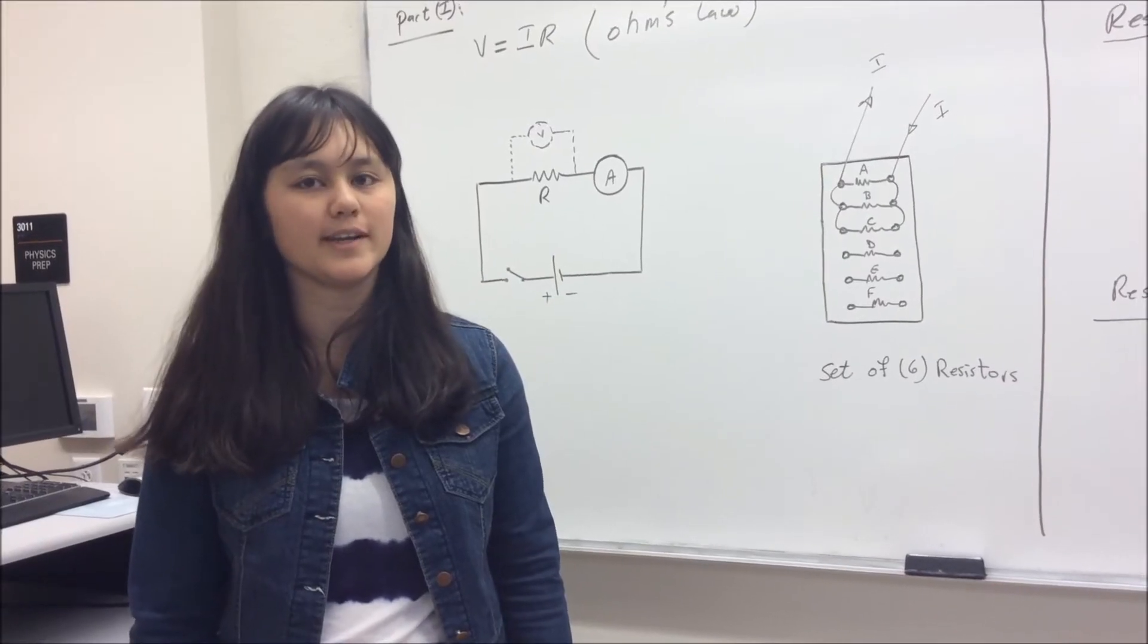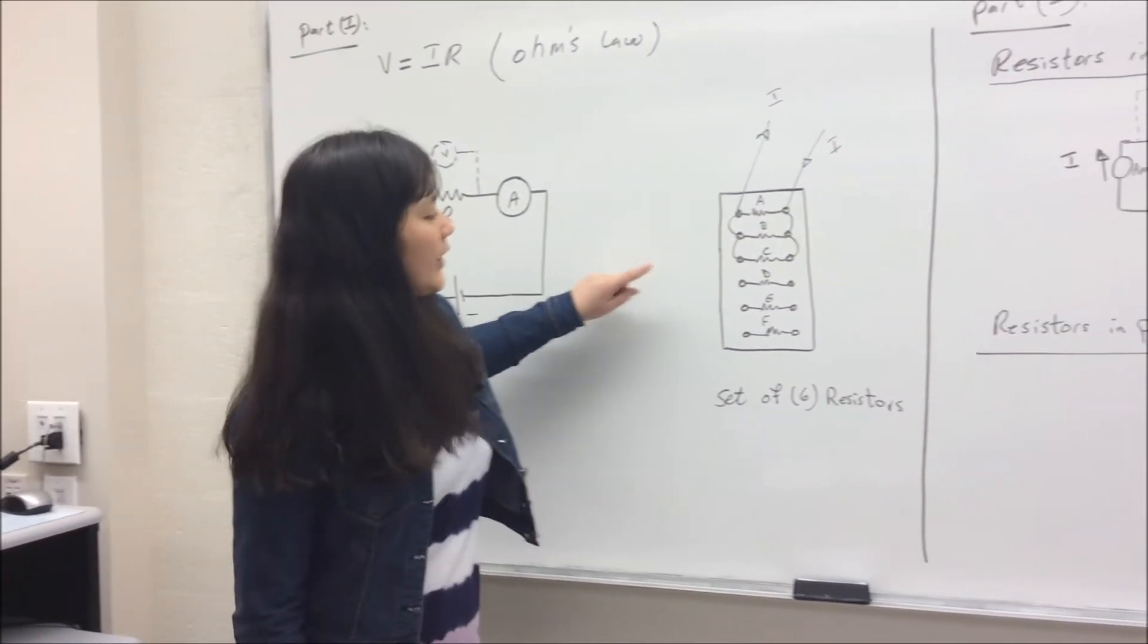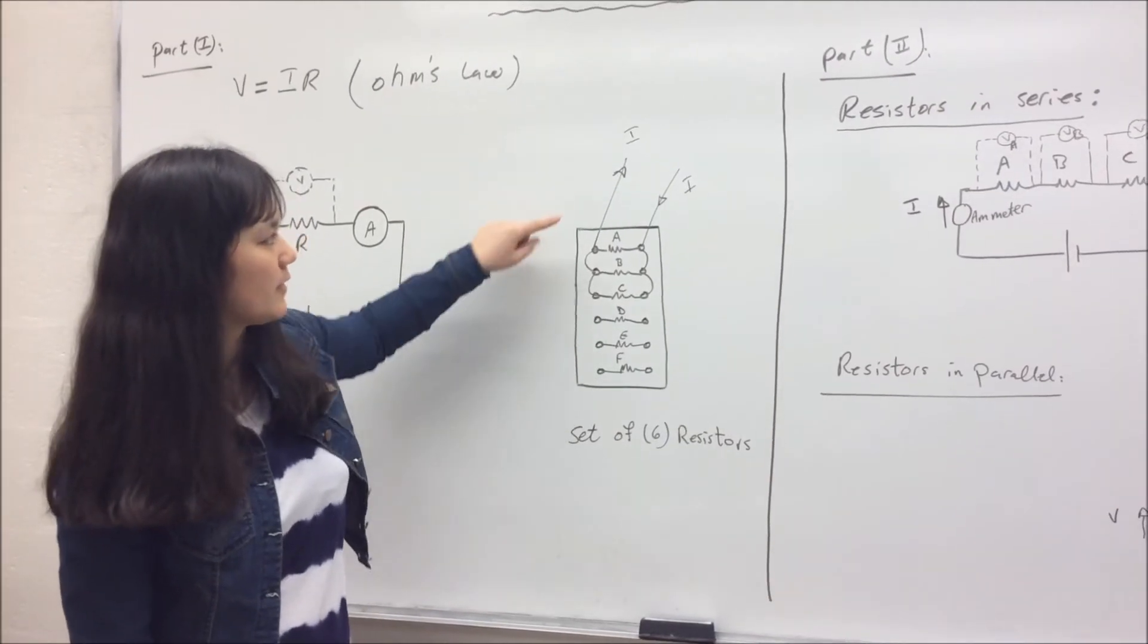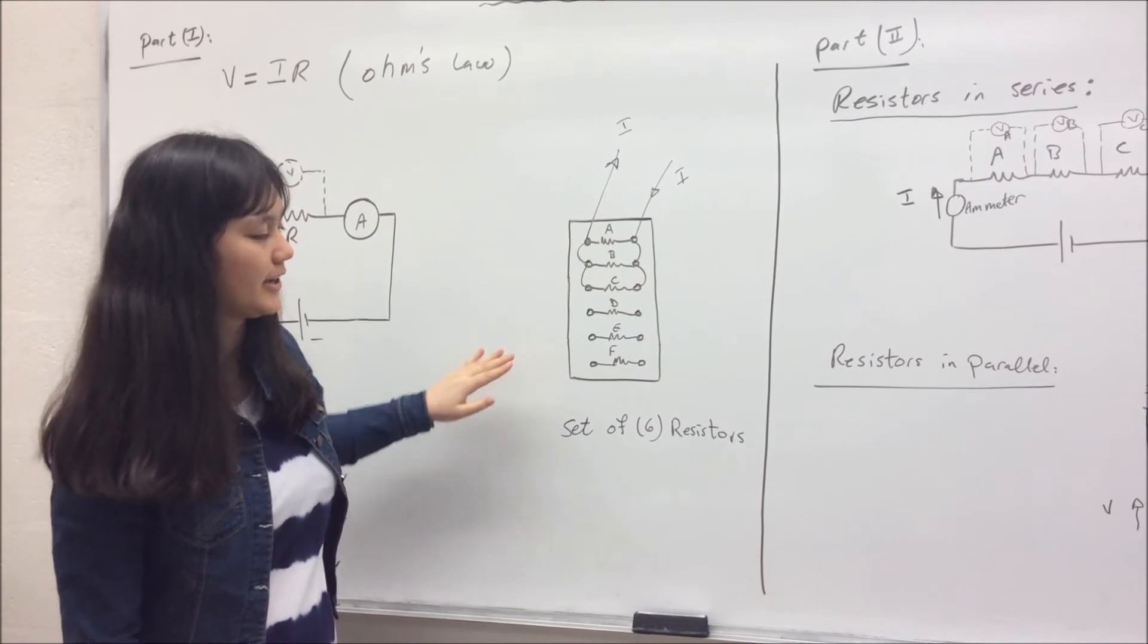For this part, we're going to connect the resistors in parallel. As shown in this diagram, you're going to connect the positive and negative terminals of the power supply to both ends of A. And then continue the connection as shown here.